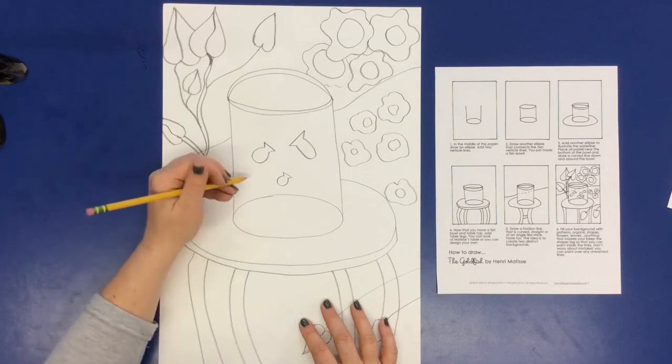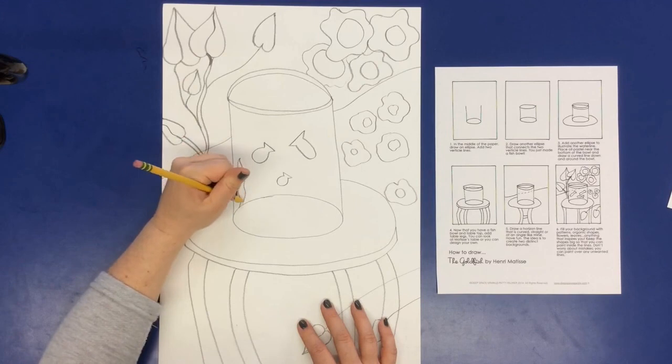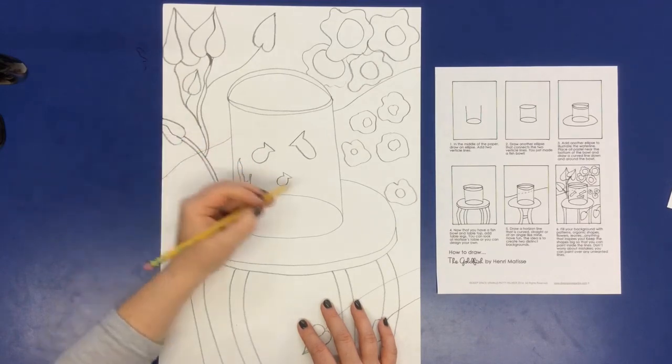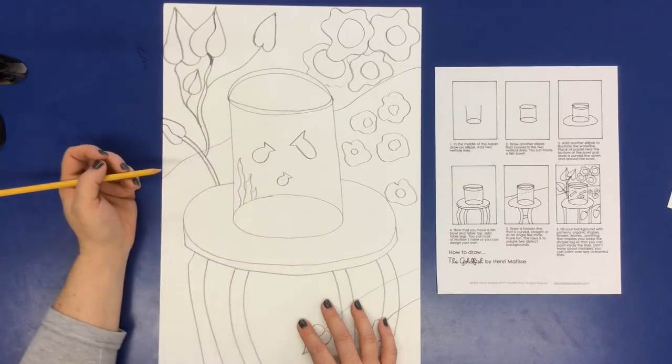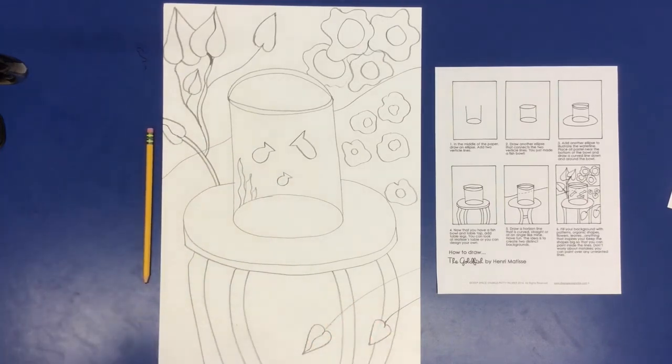And from there you can add in some more details on your fish tank if you want, some seaweed, a little fish house, different things that you would love. And that's what we're doing today.